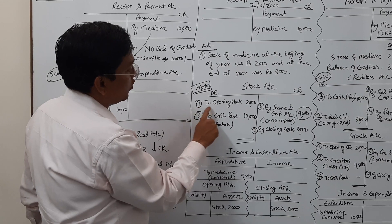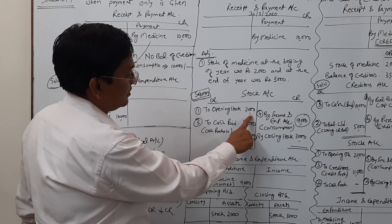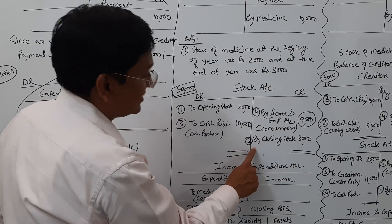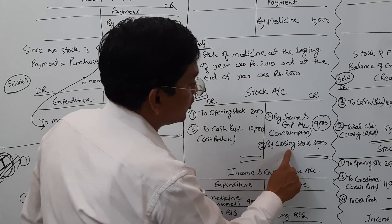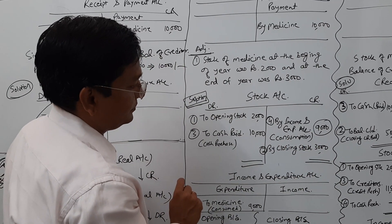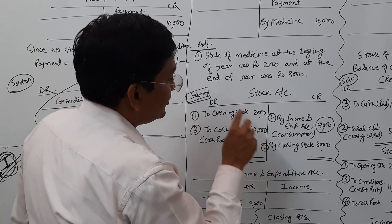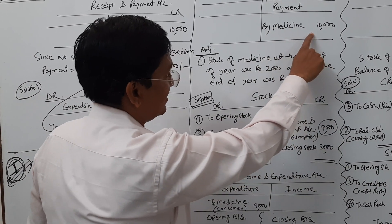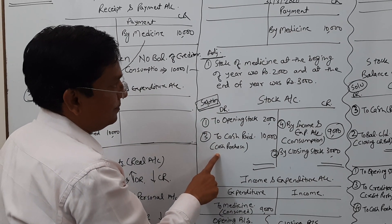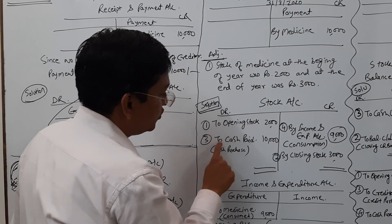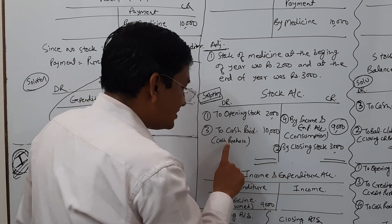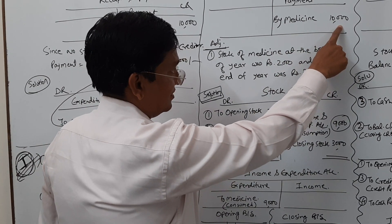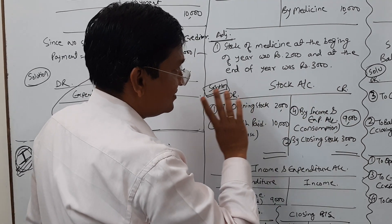In the stock account: Number 1 — opening stock 2,000 on the debit side as the opening balance. Then on the credit side: stock account debit to cash — cash paid goes to the credit side. So debit side entry number 3: to cash paid 10,000. This is a cash purchase because the balance of creditors is not given. The amount paid, 10,000, is cash purchase. This payment credit is stock debit.